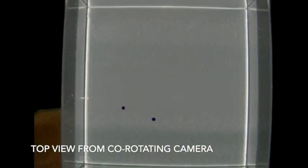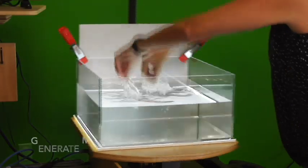We insert a paper dot and the top view from the co-rotating camera shows that the paper dot is not moving in the rotating reference frame, meaning that the water is all moving at the same speed as the rotating table and it's in solid body rotation.